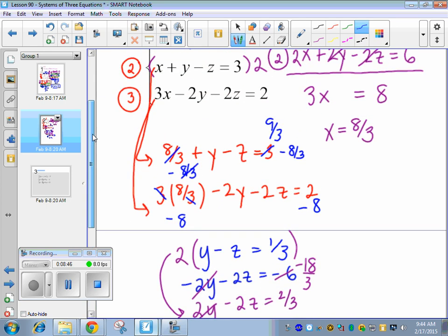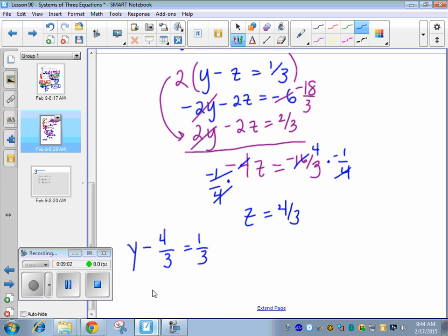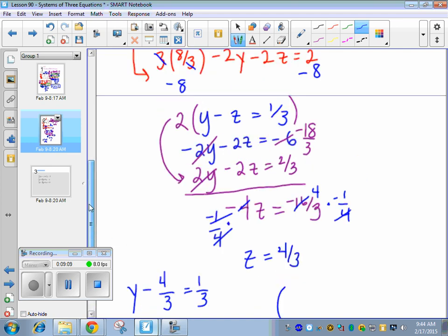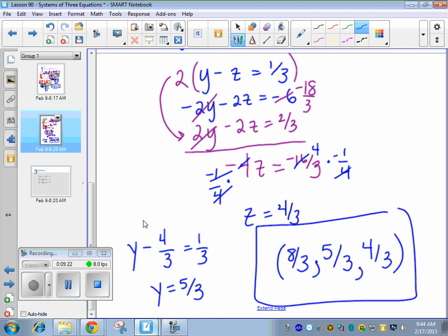So we've got x and we've got z. I would probably just go back to this one. y minus z equals 1 third. So now I've got y minus 4 thirds equals 1 third. So we can add 4 thirds over to this side and we get 5 thirds. So now let's write this coordinate. So x is 8 thirds. y is 5 thirds. z is 4 thirds. And we're done.